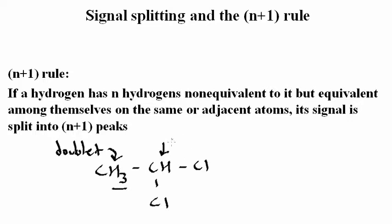The single hydrogen here on the CH has a set of three non-equivalent neighbor hydrogens. So, here N is 3 due to these guys. And so, this is going to be split into N plus 1 or 4, a quartet.